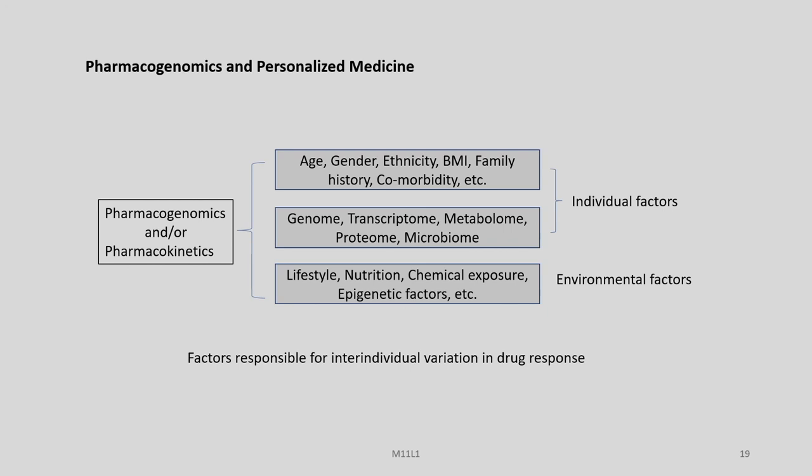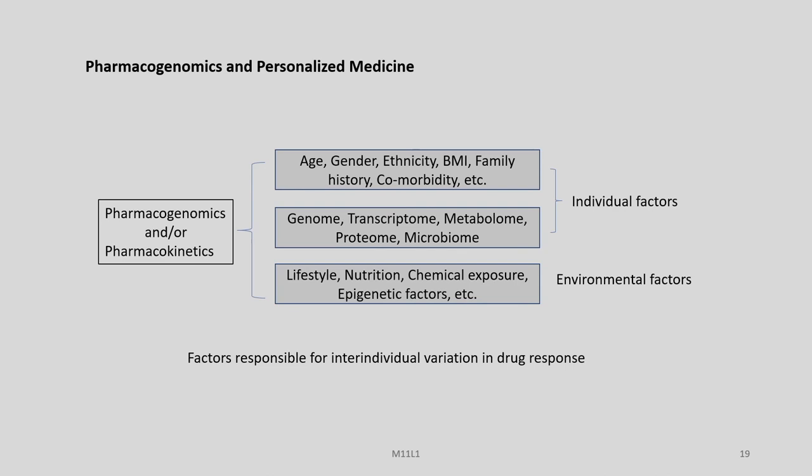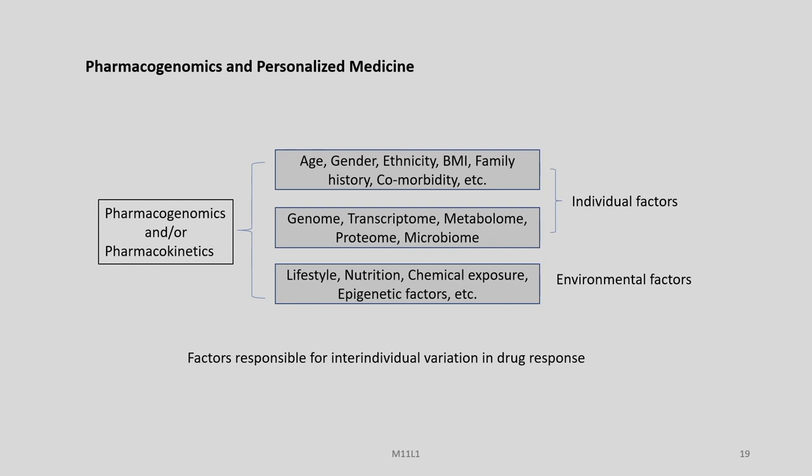There are various factors responsible for inter-individual variation in drug response, ranging from age, gender, ethnicity, BMI, family history, and co-morbidity, or from the genome, transcriptome, metabolome, proteome, and microbiome — which are considered individual factors — to lifestyle, nutrition, chemical exposure, epigenetic factors, and even the place of residence, which are part of the environmental factors. Together, these individual and environmental factors influence pharmacogenomics and pharmacokinetics with respect to disease as well as personalized medicine. When a gene variation is linked to a certain pharmacological reaction in a patient, there is the possibility of making therapeutic decisions based on genetics, such as modifying the dosage or switching to a different treatment. Scientists evaluate gene variations impacting a person's drug response by following modern approaches like multi-gene analysis or whole genome single nucleotide polymorphism profiles.